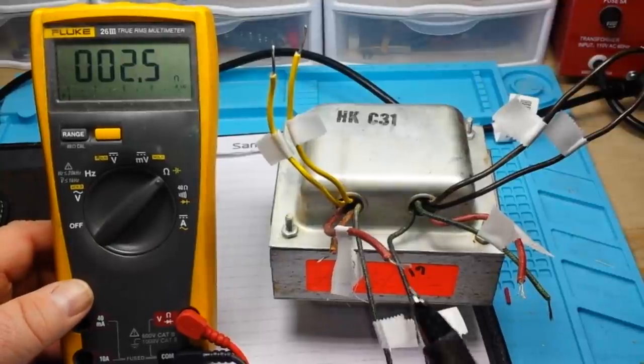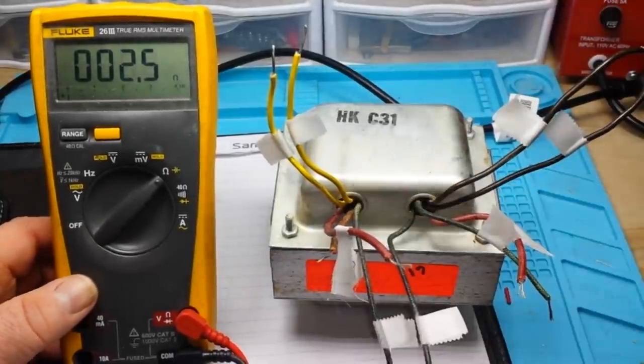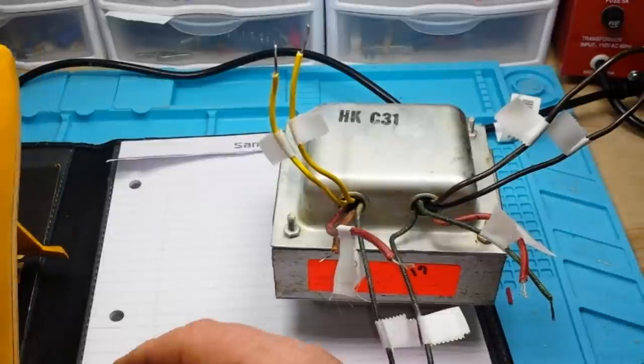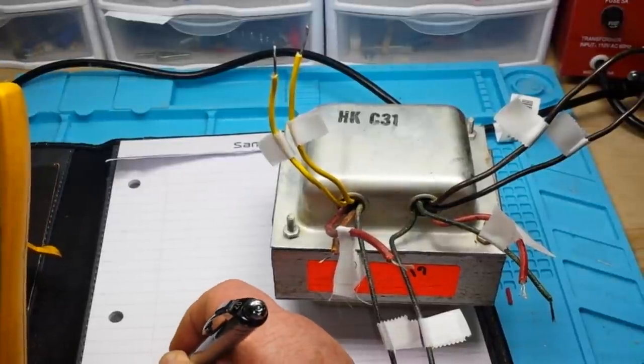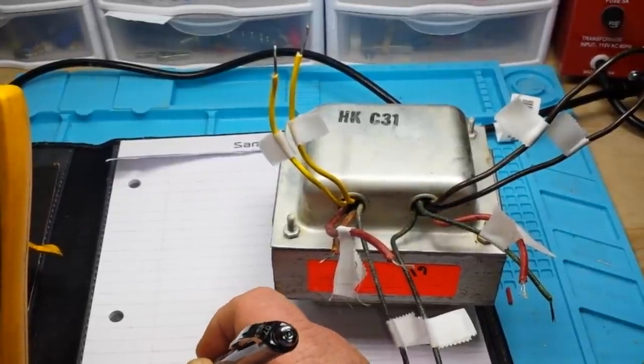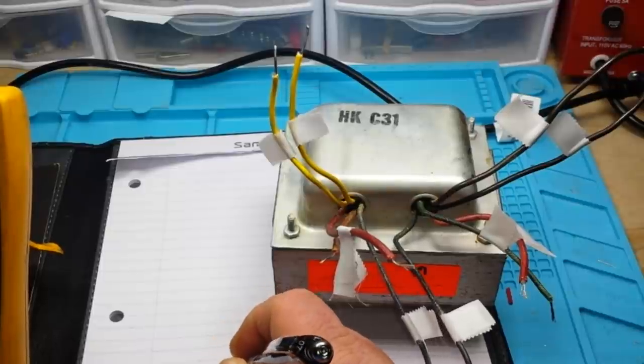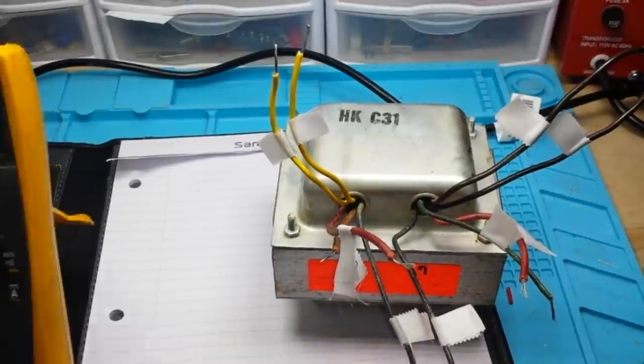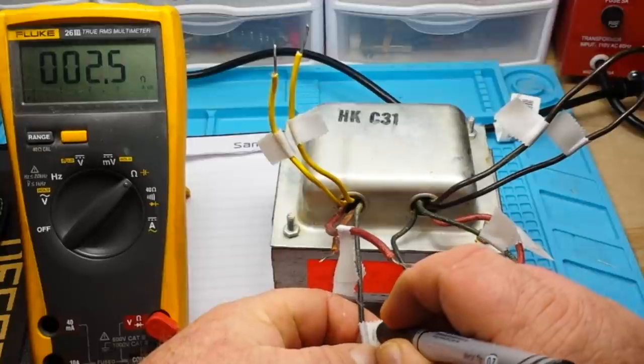I expected to see closer to four ohms, but this is unknown vintage. So we will say the textured black are the primary. That's what I'm guessing. I'm going to mark them with a P.